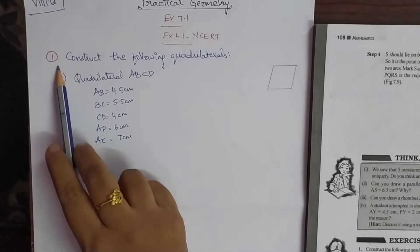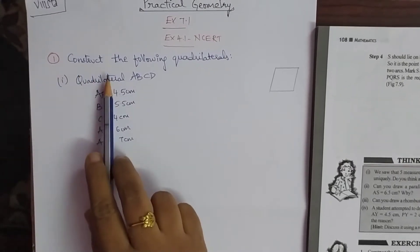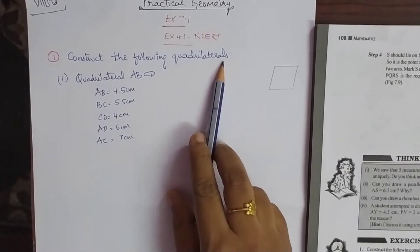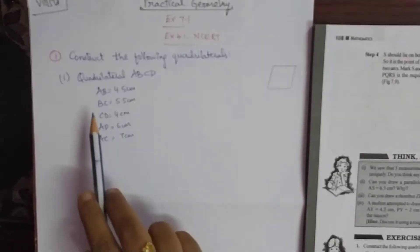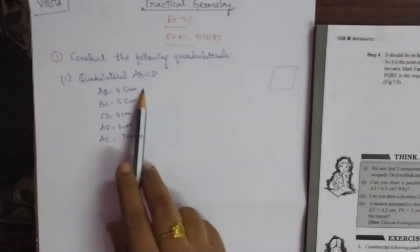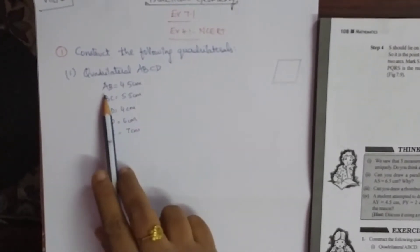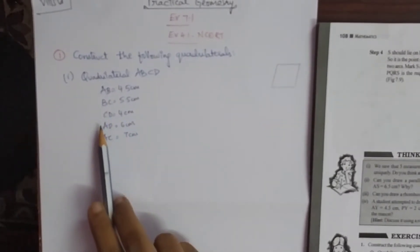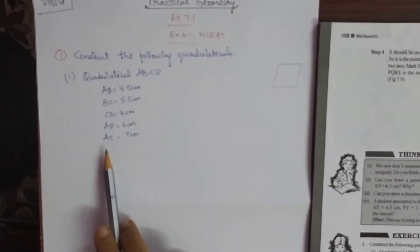The first question says: construct the following quadrilaterals. Quadrilateral A, B, C, D. They have given measurements of AB, BC, CD, AD, and AC.